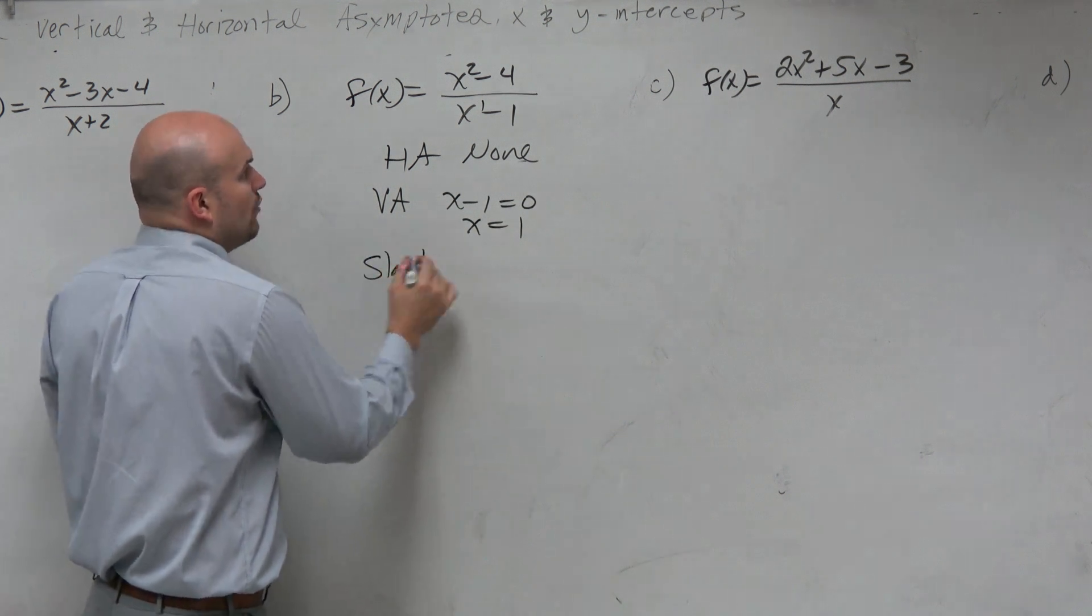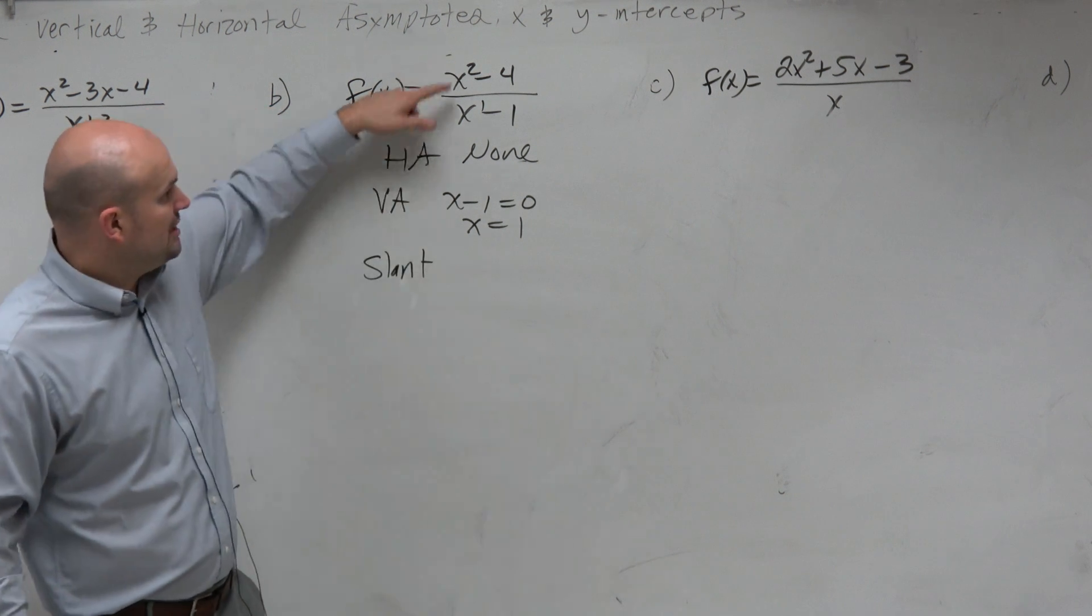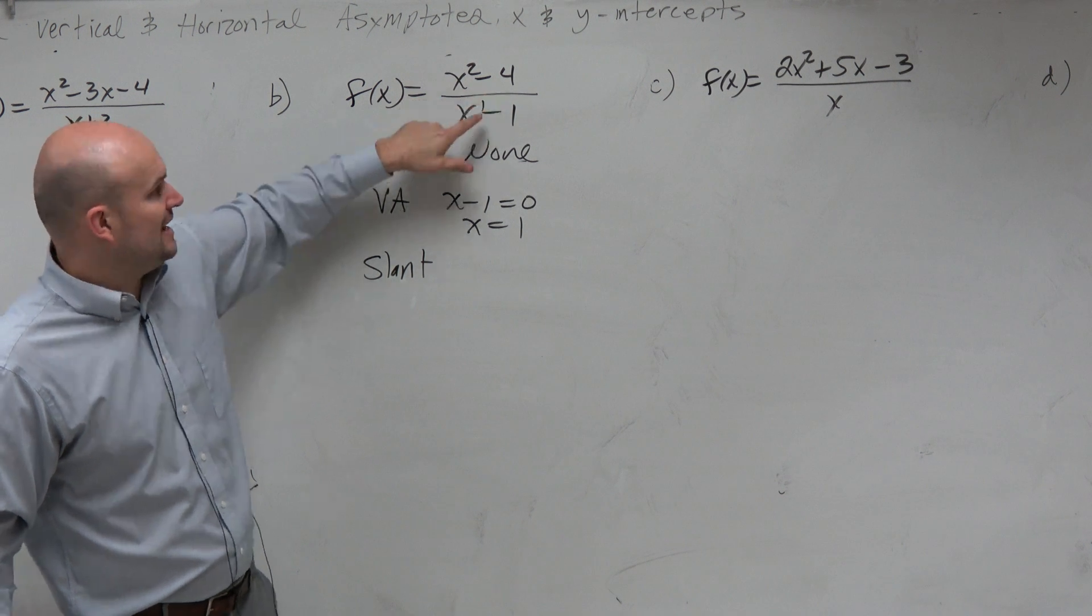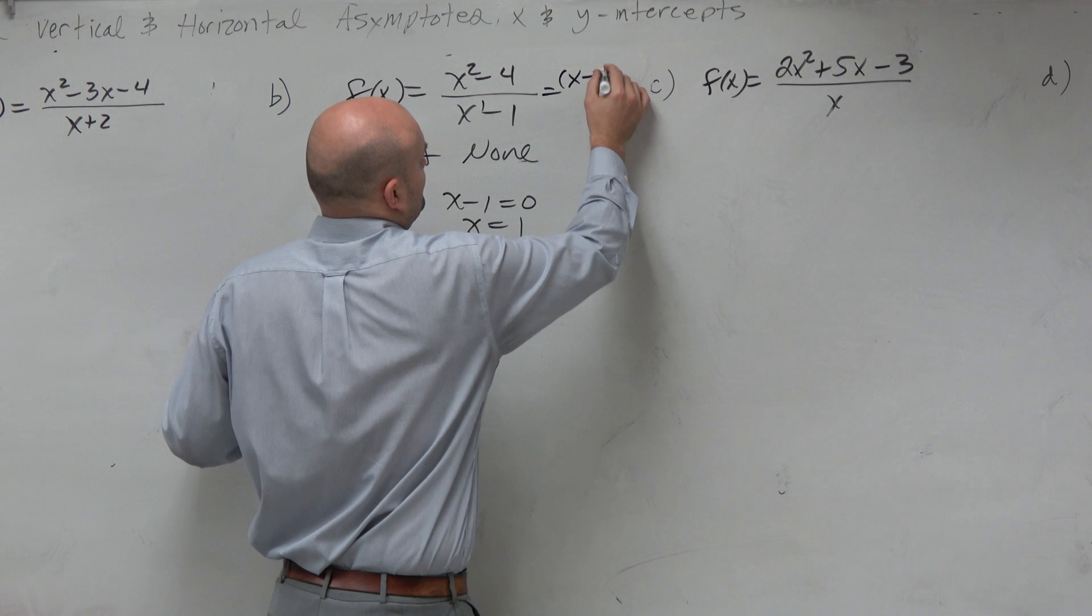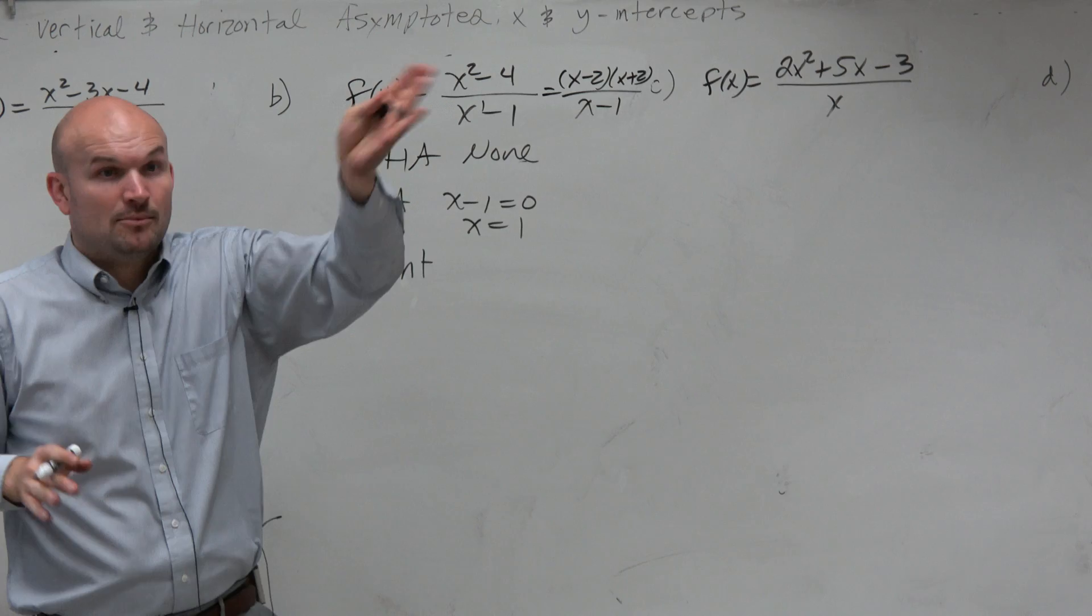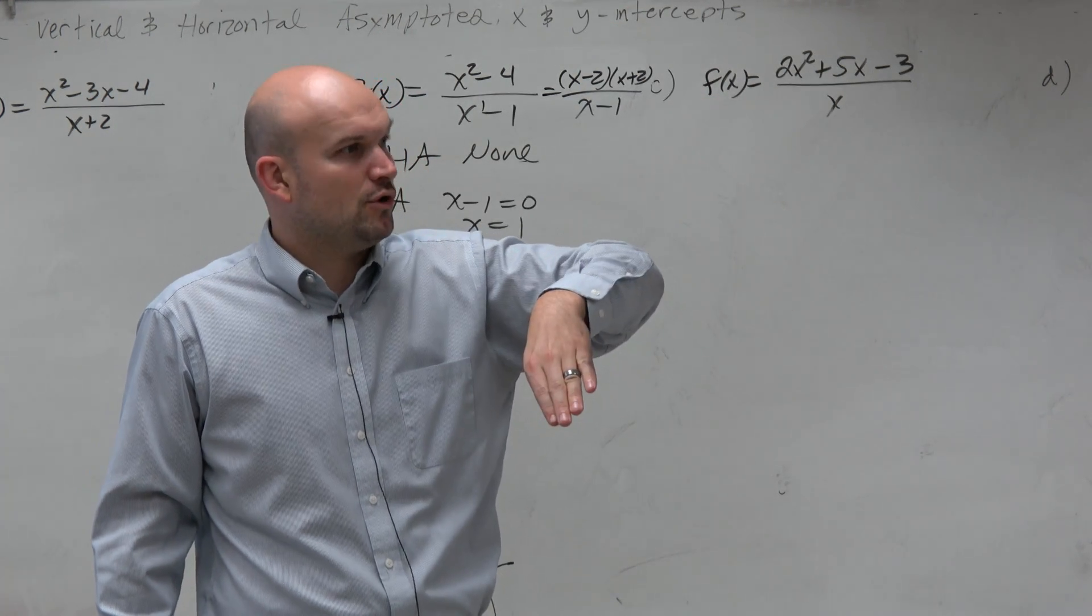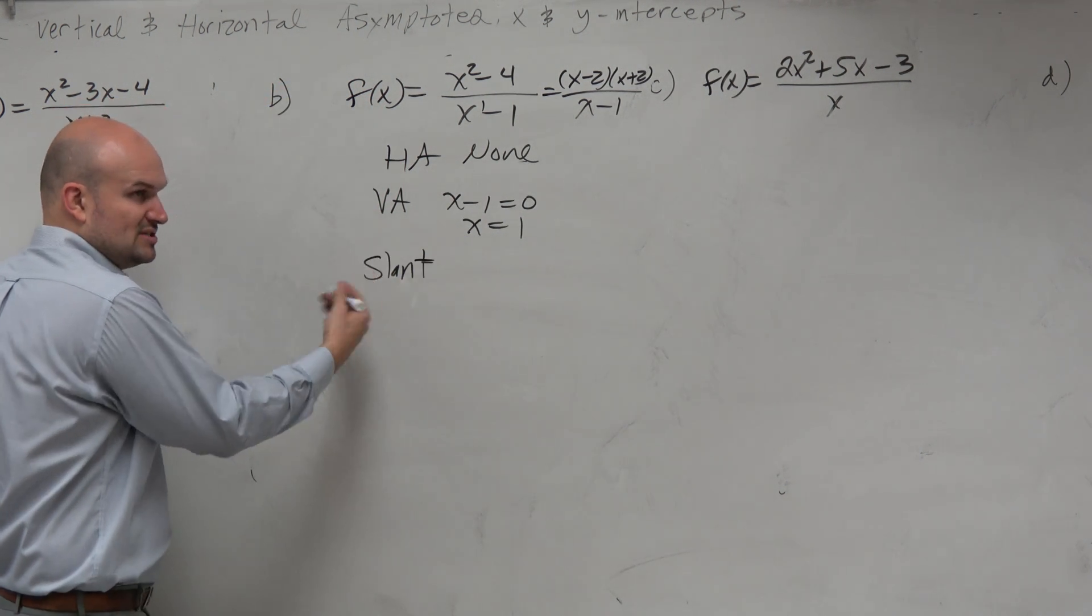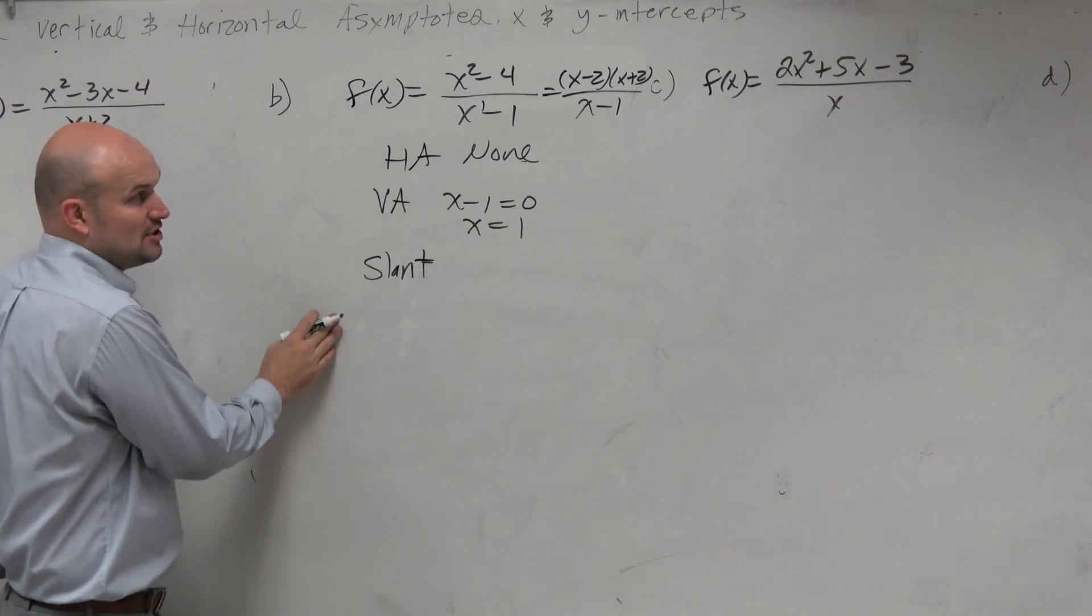But when there is not a horizontal asymptote, there's two things that could happen. Could it be that this is actually a hole? It could have been, but fortunately I see that x minus 1 is not going to divide out with this. So nothing divides out. But be careful, because that could be a hole. In most cases we're going to be looking at a slant asymptote. So to find the slant asymptote, we're going to go back to what we did before: division.